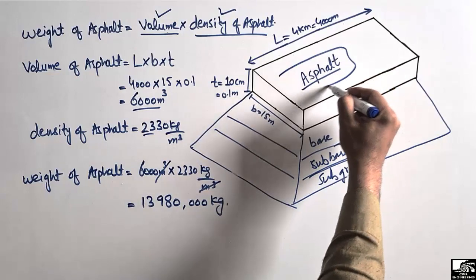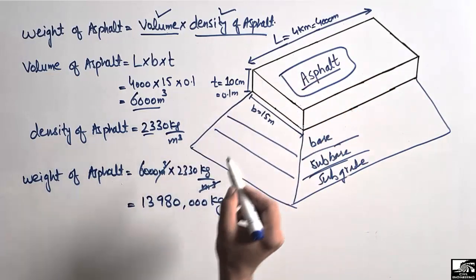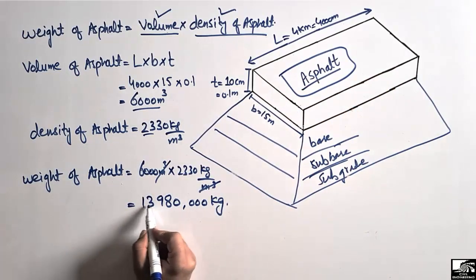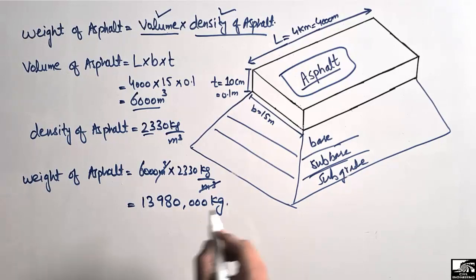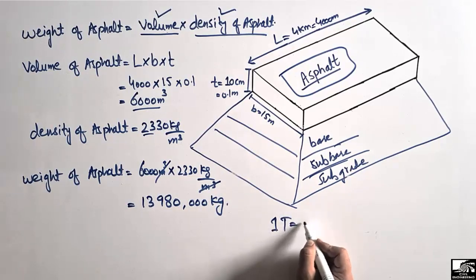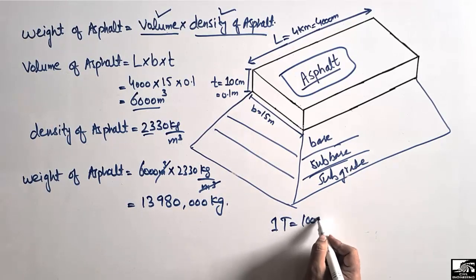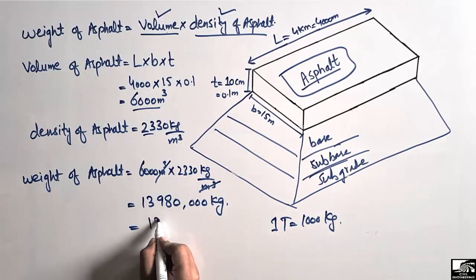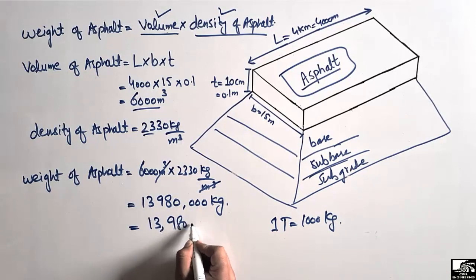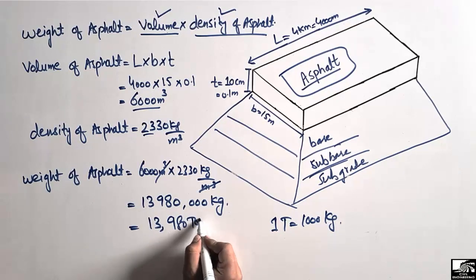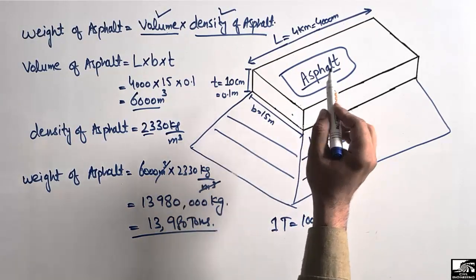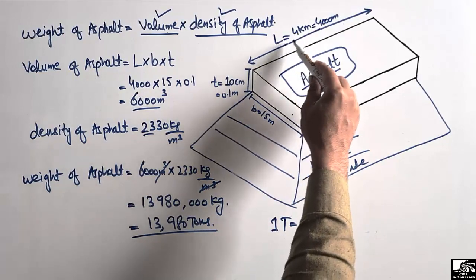To find the weight of asphalt in tons, we divide by 1000, since one ton equals 1000 kilograms. Dividing 13,980,000 by 1000, we get 13,980 tons. This is the total weight of asphalt used in this flexible pavement.